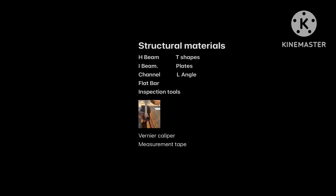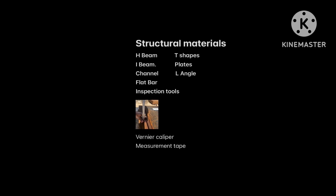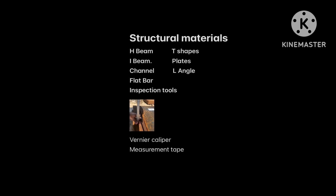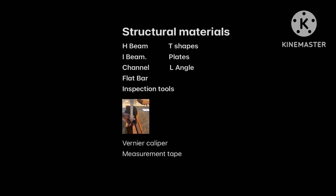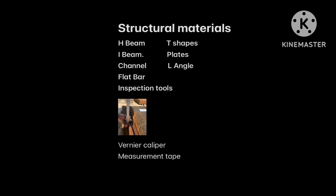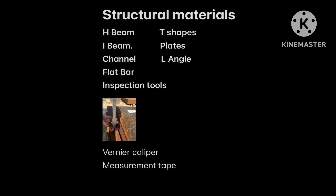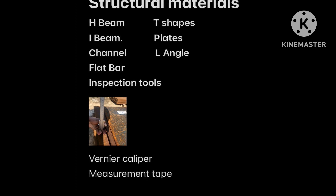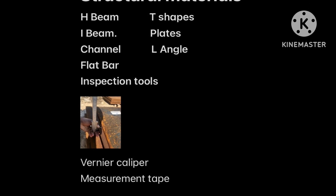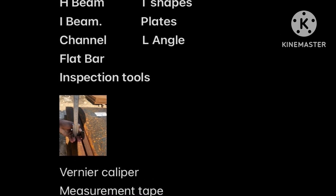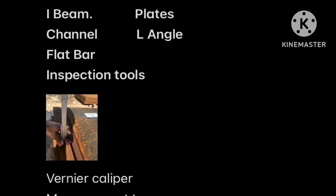The structural materials include H-beam, I-beam, channel, flat bar, T-shapes, plates, L-angles, and tubulars — all come under structural materials. The instruments we use are vernier calipers and measuring tapes.